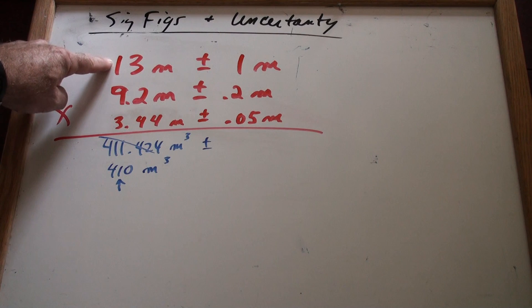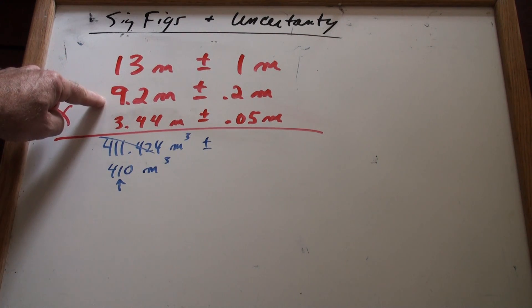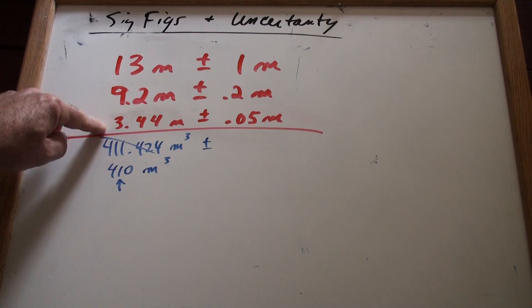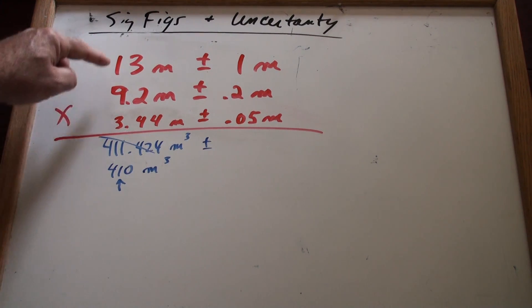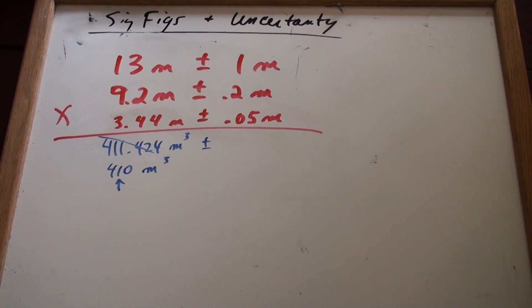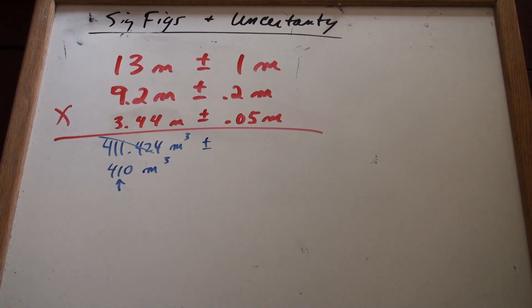what's the highest this could be? 14. What's the highest this could be? 9.4. What's the highest this could be? 3.44 plus 0.05 is 3.49. So if you multiply these three numbers together, you would get the highest it could be and still be in the range of uncertainty. Well,